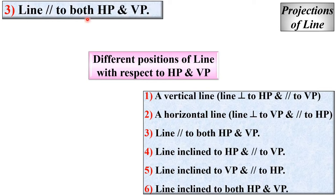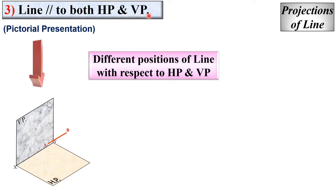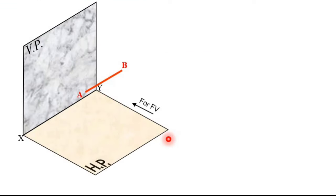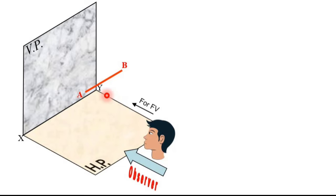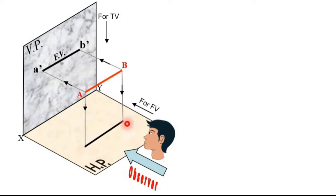Case number 3: the line is parallel to both HP and VP. In the pictorial presentation, the AB line is parallel to both HP and VP. For the front view, the observer projects onto the vertical plane, giving A dash and B dash. For the top view, projected on the horizontal plane, you get A point and B point. So we have both the front view and the top view as straight lines.